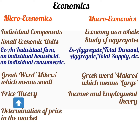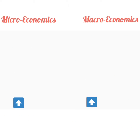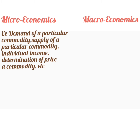Macroeconomics, on the other hand, is concerned with the determination of the size of national income, level of employment, and general price level — hence it is called income and employment theory. Examples studied under microeconomics include demand of a particular commodity, supply of a particular commodity, individual income, and determination of price of a commodity.